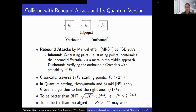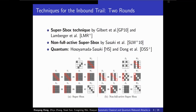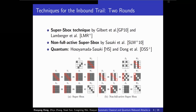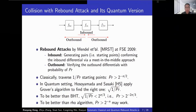In classical collision attacks, we must traverse at least 1/P_R starting points to find a collision. To outperform the birthday attack, P_R should be larger than the square root of the target. At Eurocrypt 2021, Hosomada and Sasaki showed that in the quantum setting, one can use Grover's algorithm to traverse the starting points using only sqrt(1/P_R) queries. Hence, to outperform generic quantum collision attacks, P_R can be significantly lower than in the classical setting. For example, to beat the BHT algorithm, P_R should be larger than a certain threshold.